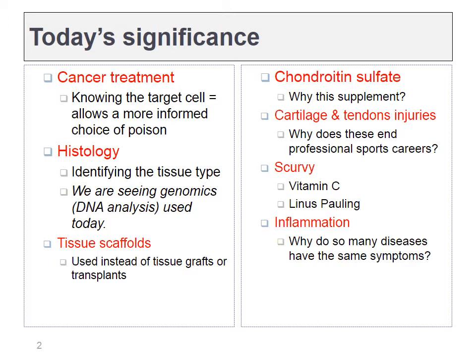We'll also talk about tissue scaffolds, which can be used instead of organ transplants or tissue grafts. We'll talk about chondroitin sulfate and why some people may take that as a supplement. We'll also cover cartilage and tendons and why injuries to these tissues can often be very difficult to repair or heal. Inflammation will be the big concept of the chapter, because it's going to be involved in nearly every infection and trauma that you treat.